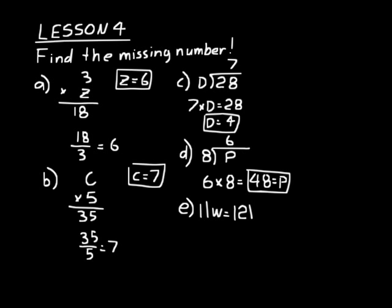Look at practice problem e: 11w equals 121. What does 11w mean? Anytime you have a number next to a letter, that means multiplication — so you're saying 11 times w equals 121. This is similar to problems a and b; the unknown is one of the factors. We take the product 121 divided by 11 using long division: 11 times 1 is 11, 12 minus 11 is 1, bring down 1, and 11 minus 11 is 0. So w equals 11.